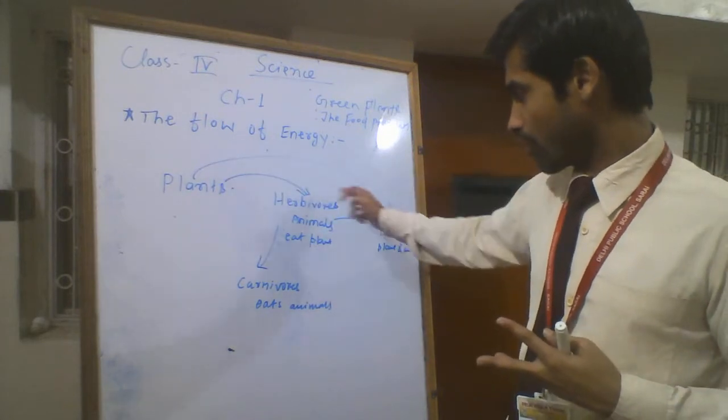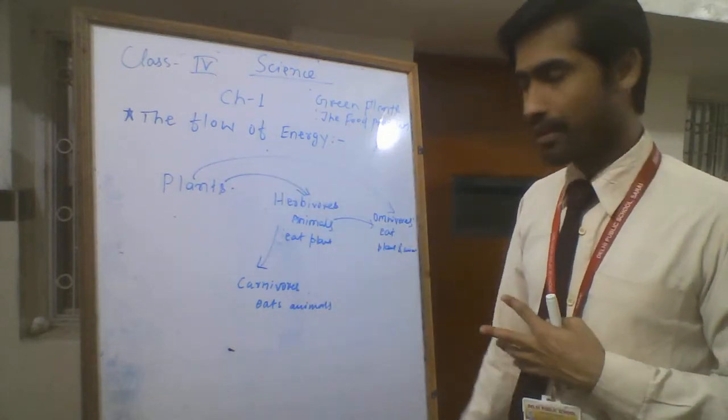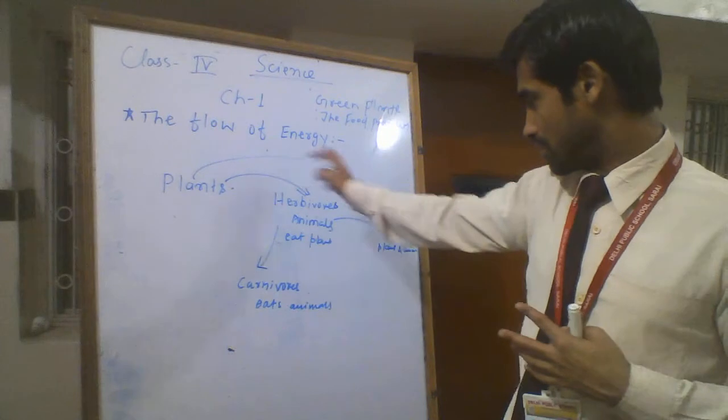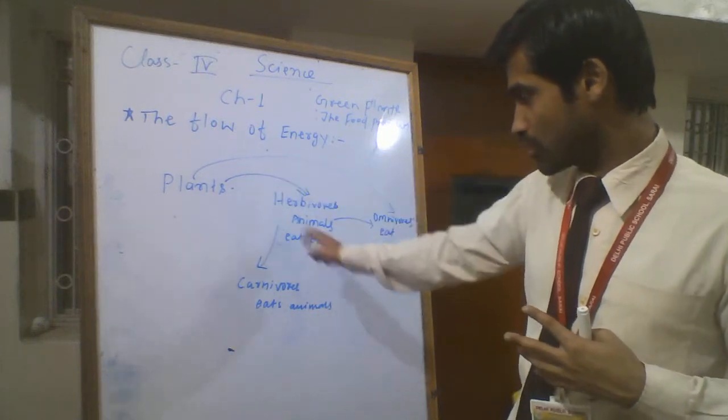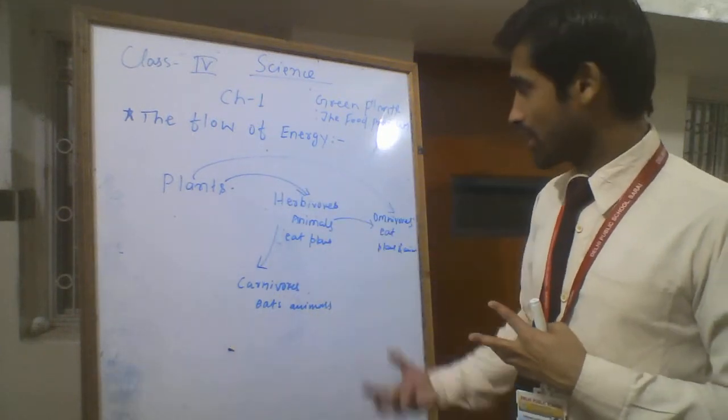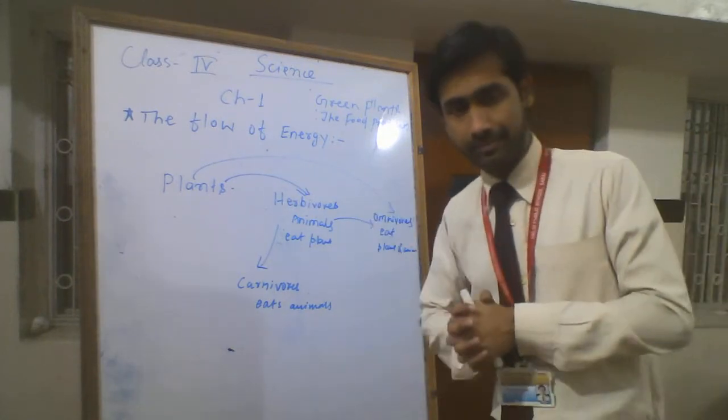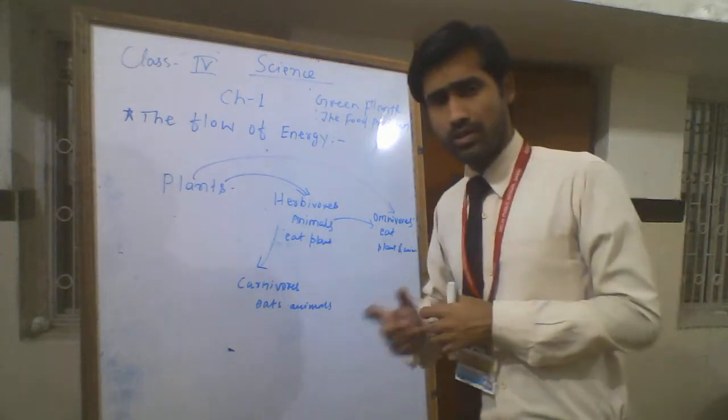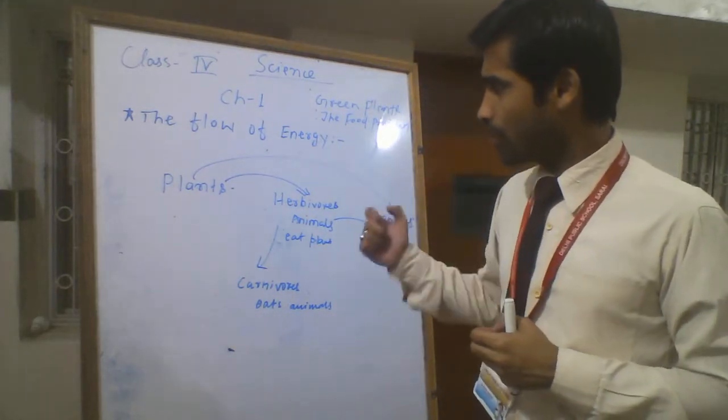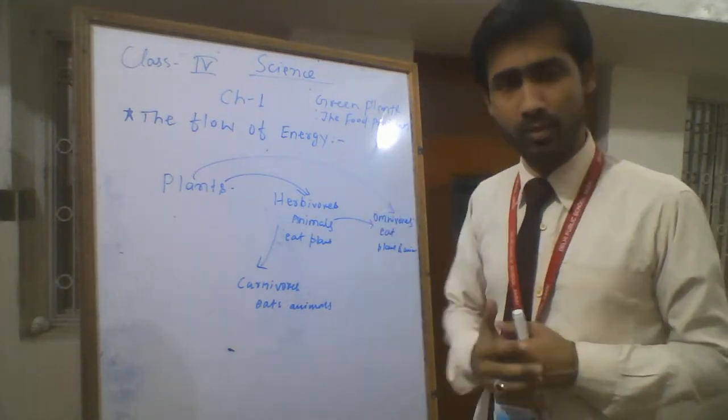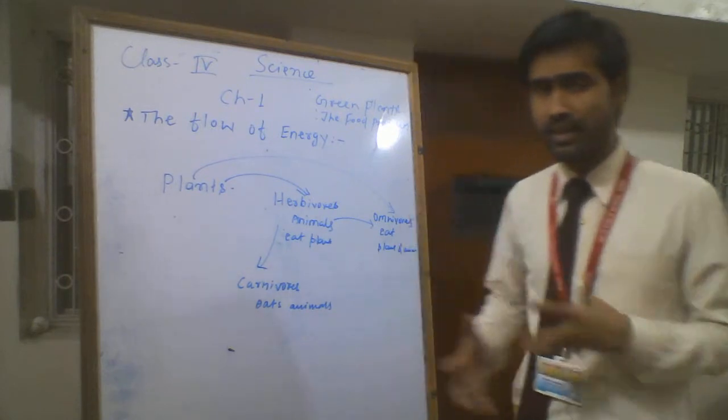Some animals also eat other animals. This way, omnivores animals get energy from both sources. The flow of energy is running through the ecosystem. The next question is: how are plants, animals and human beings interdependent to each other?